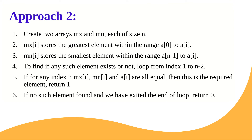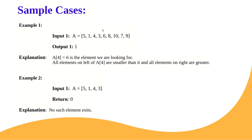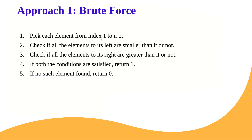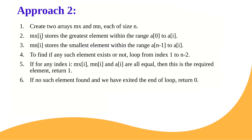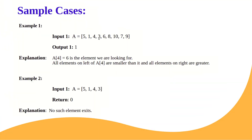Approach 2: create two arrays mx and mn each of size N. Array mx[i] stores the greatest element found from the start up to index i. So mx[4] would be 6 because the greatest element from index 0 to index 4 is 6. And mx[3] would be 5 because the greatest element from index 0 to index 3 is 5.